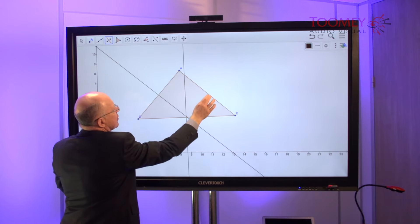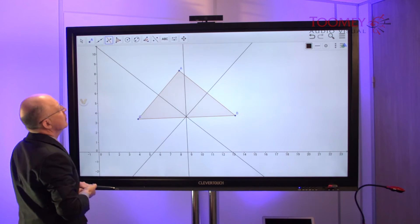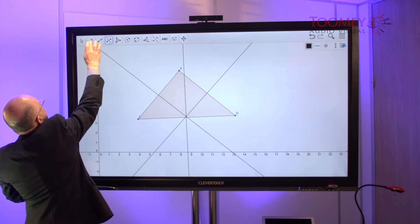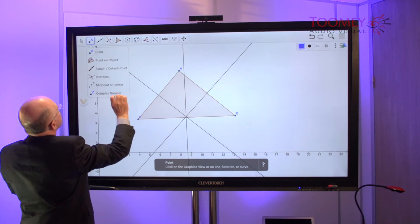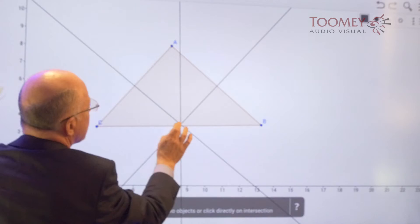I'm pointing at the sides in turn, and then I'll choose a point of intersection between those three.